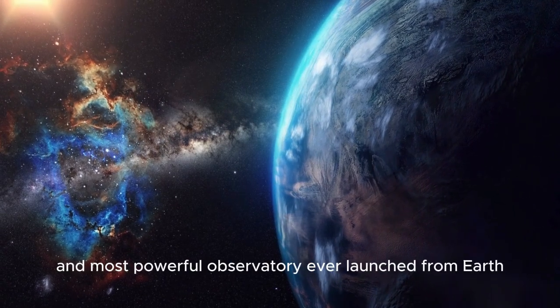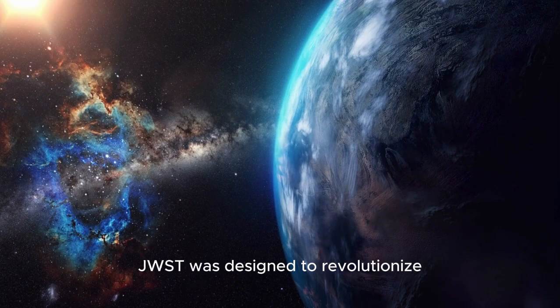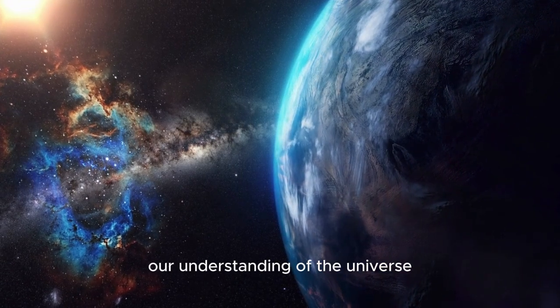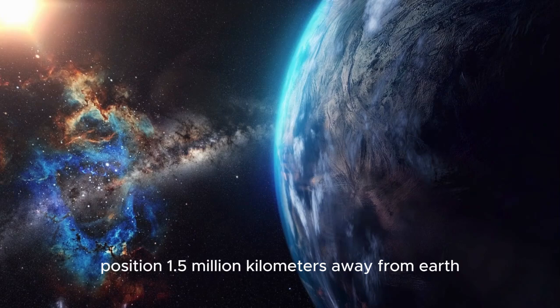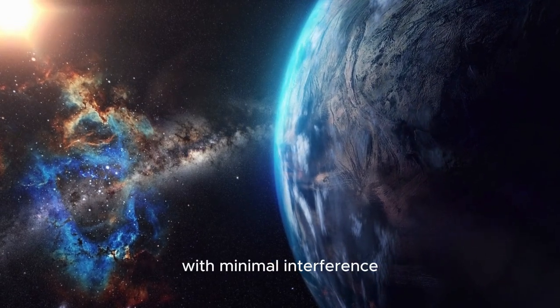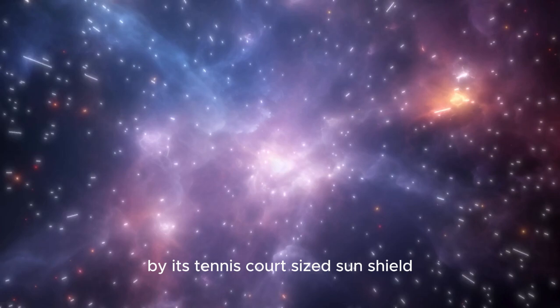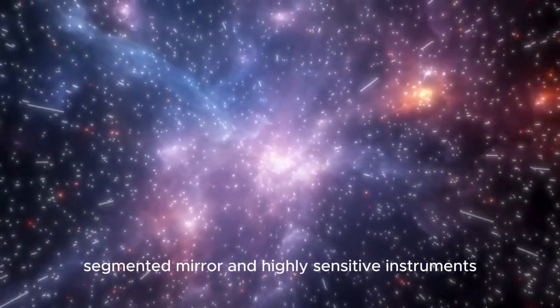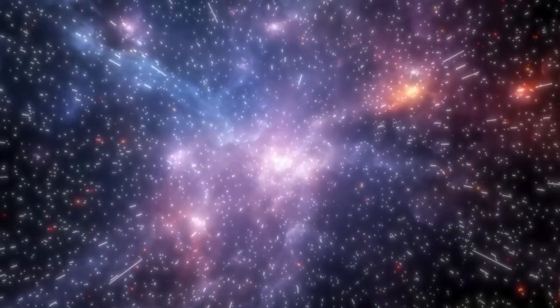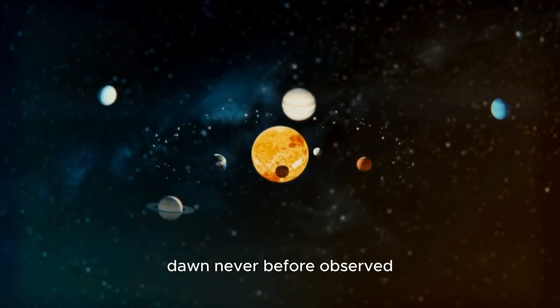Renowned as the largest and most powerful observatory ever launched from Earth, JWST was designed to revolutionize our understanding of the universe. Positioned 1.5 million kilometers away from Earth, with minimal interference and cooled close to absolute zero by its tennis court-sized sun shield, the telescope features a gigantic segmented mirror and highly sensitive instruments.